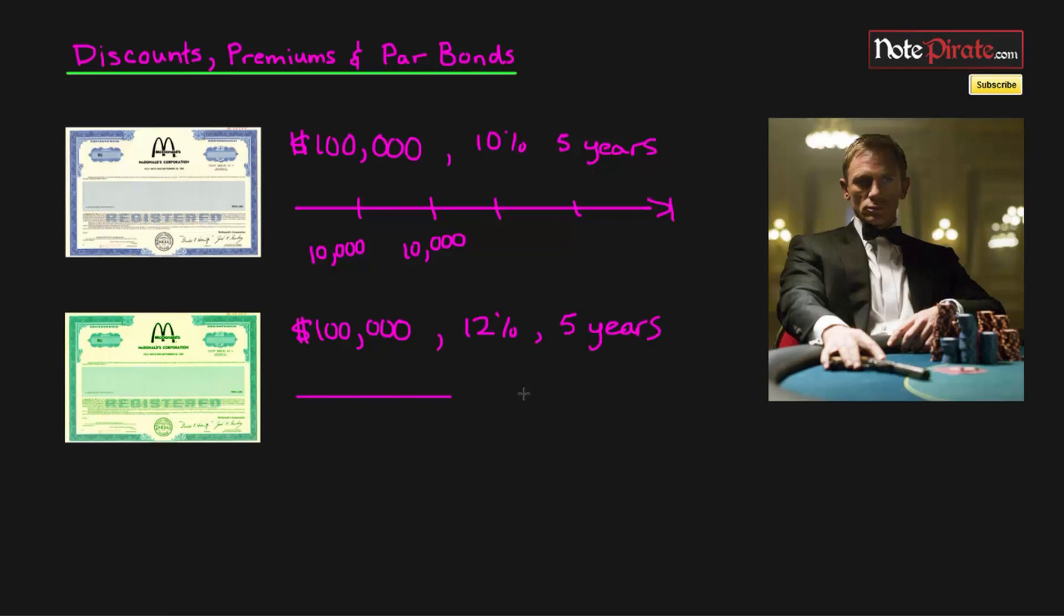So the timeline is going to actually look very similar to the first one. We're going to have 5 tick marks: 1, 2, 3, 4, 5. And the interest is going to be 12% of $100,000 or $12,000 a year.